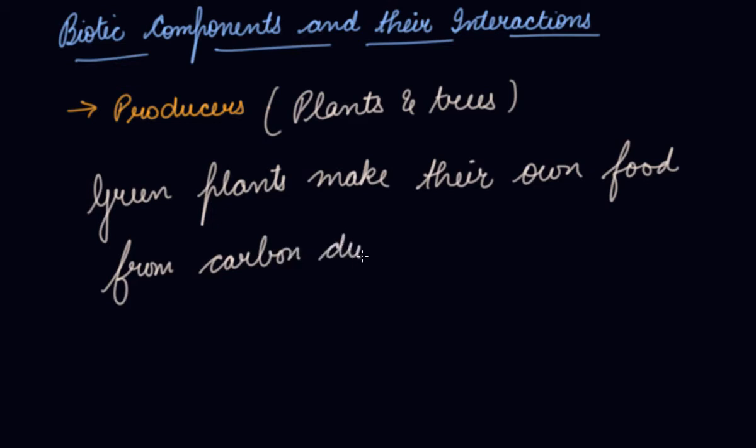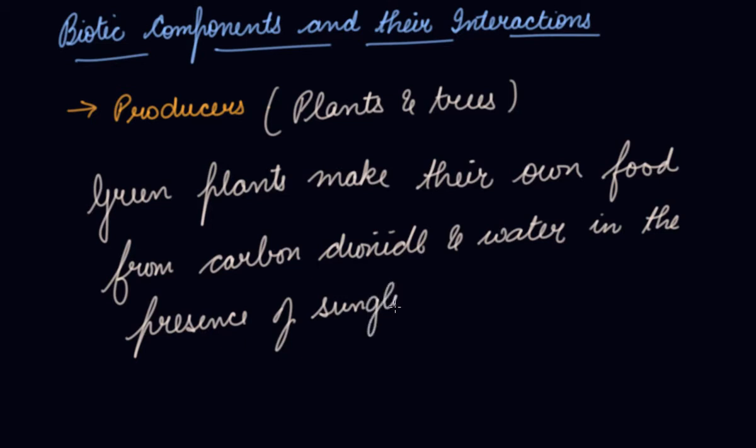This happens in the presence of sunlight. This process is known as photosynthesis. Green plants are not dependent on anyone for their food. They produce their own food with the presence of carbon dioxide, water, and sunlight. They are like their own producers. So we have divided the biotic components into three parts: producers, consumers, and decomposers.